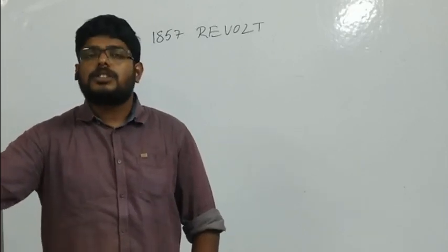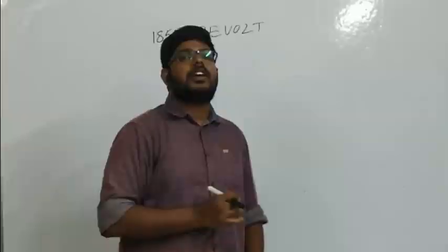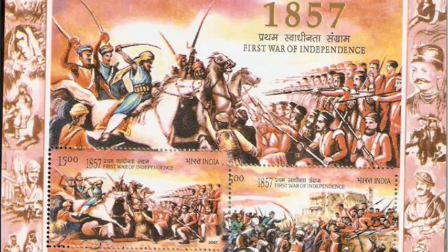The options are: A — failure of Doctrine of Lapse, B — subsidiary alliance, C — sepoy mutiny, and D — killing of Mangal Pande. The question asks specifically what acted as a trigger of the 1857 revolt.